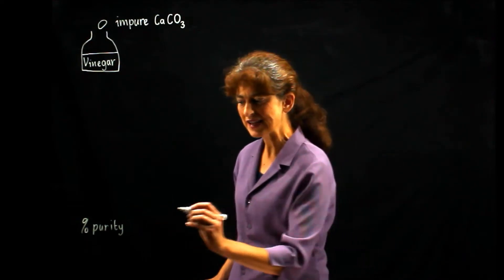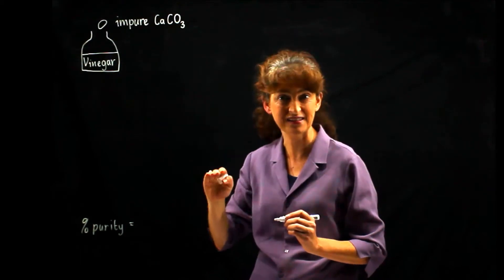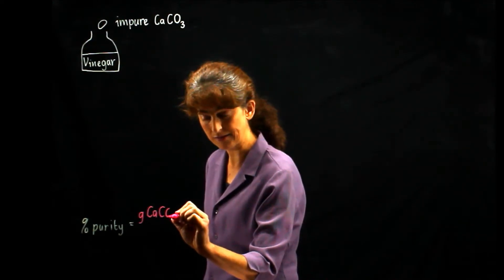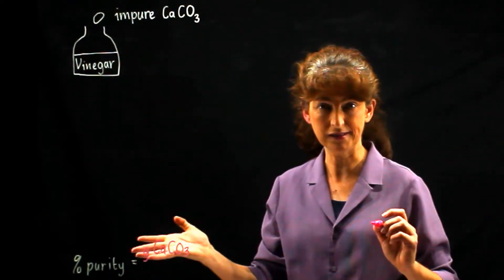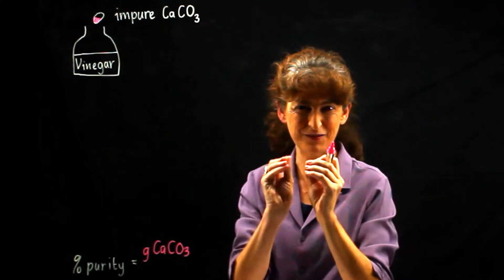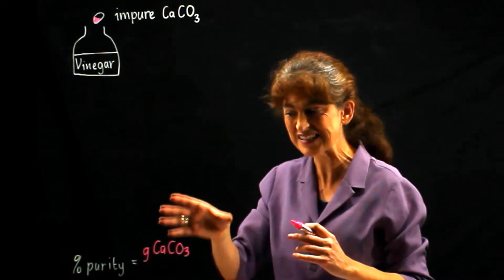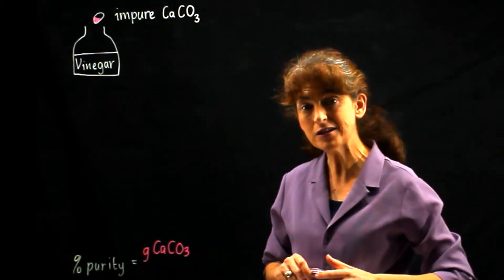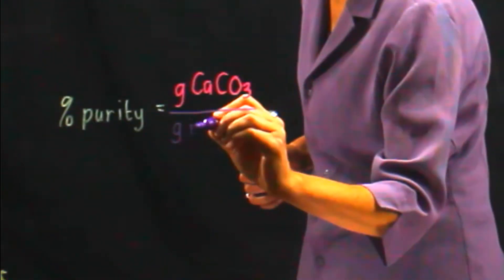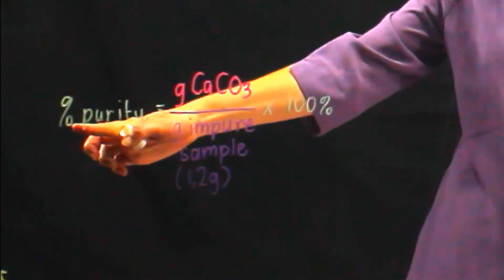What does that mean? Percent purity is the fraction of this tablet that is actually calcium carbonate, expressed as a percent. So we need the mass that is actually pure calcium carbonate. That tablet is not all calcium carbonate — it's a mixture. Only some of it is calcium carbonate. We need to know how much is actually calcium carbonate, then divide that by the mass of the whole tablet. We're told the mass of the whole tablet is 1.2 grams, and then we multiply by 100% to get the percent purity.